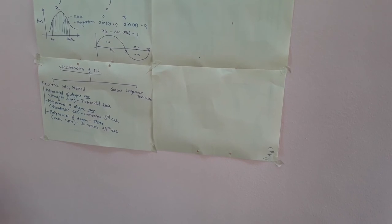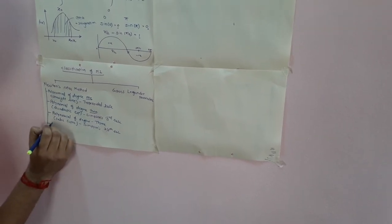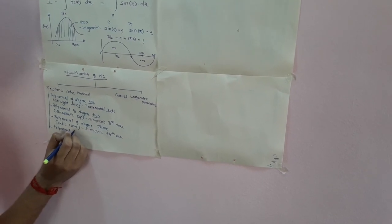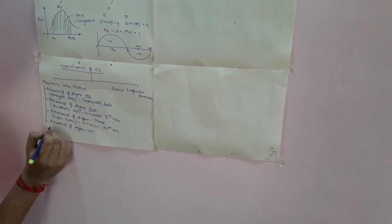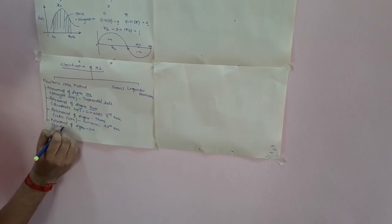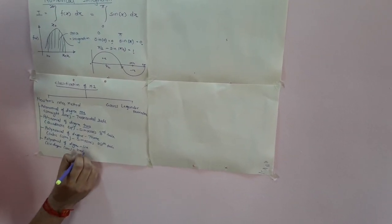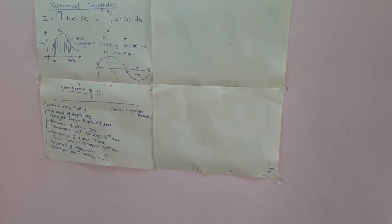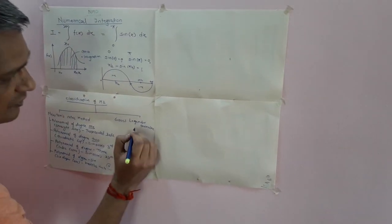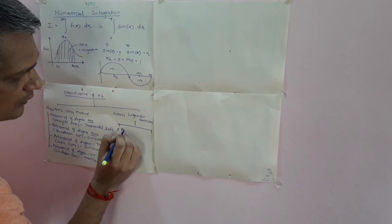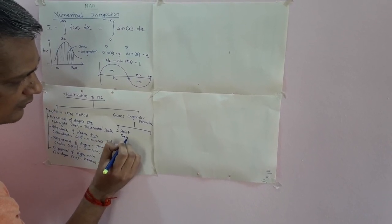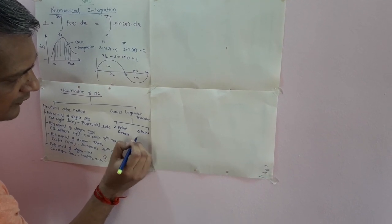Further methodologies are available. If you use a polynomial of degree 6 — a six-degree curve — then we can use Weddle's Rule. However, this methodology is not part of your syllabus, so you don't need to worry about it. For the second category, the Gauss-Legendre formulas, there are two formulas: the Gauss-Legendre two-point formula and the three-point formula.